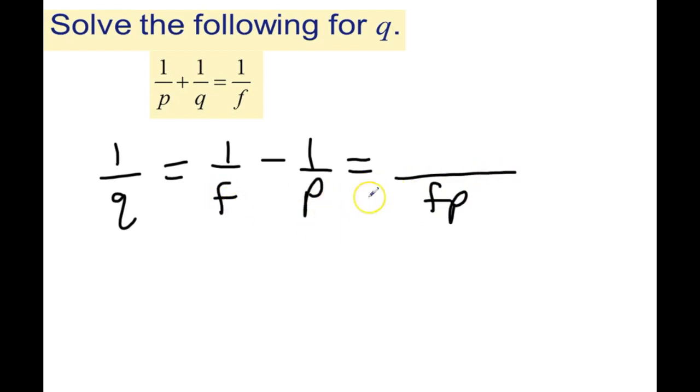And so you come over here, F will go into F one time, P times. F will go into FP, P times. So it's P and P will go into P minus, P will go into P, F times. So it's P minus F.